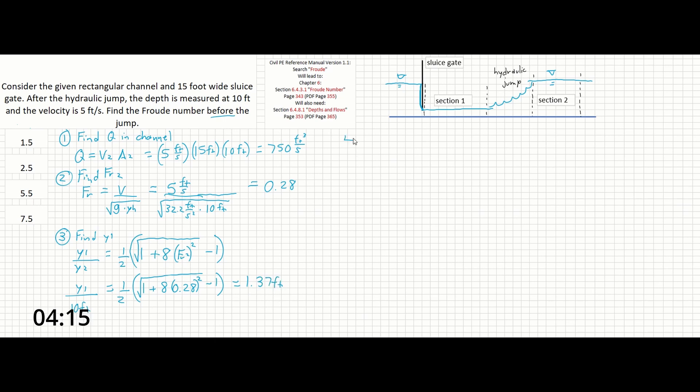Step 4, we're almost there. Solve for velocity in section 1. We know our Q, so V₁ in this case is going to be Q over A₁. Now that we have our Y₁ we can get A₁. So that's going to be 750 cubic feet per second over 15 feet, because the width is constant throughout the entire channel, times 1.37 feet. And that's going to give us just about 36.6 feet per second.